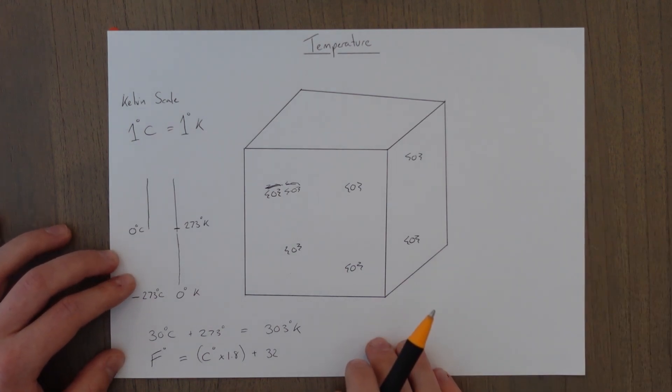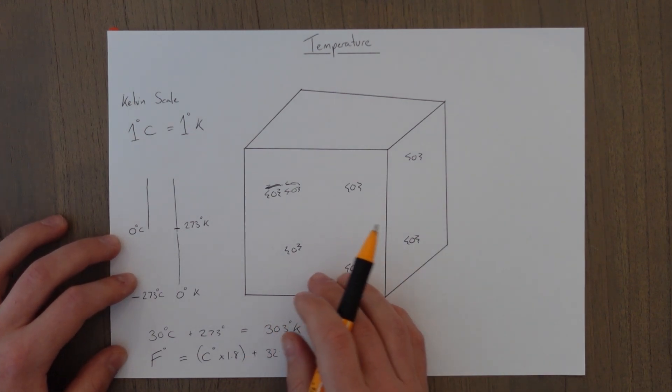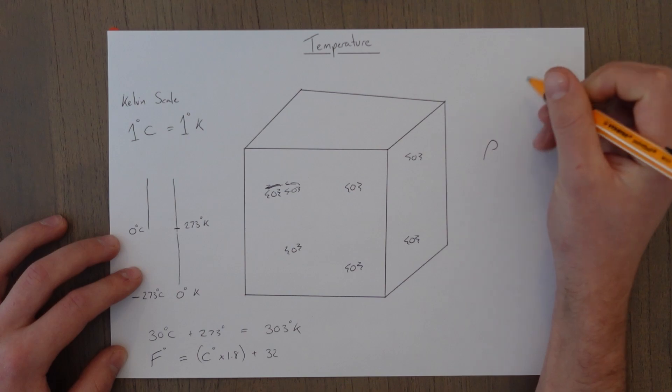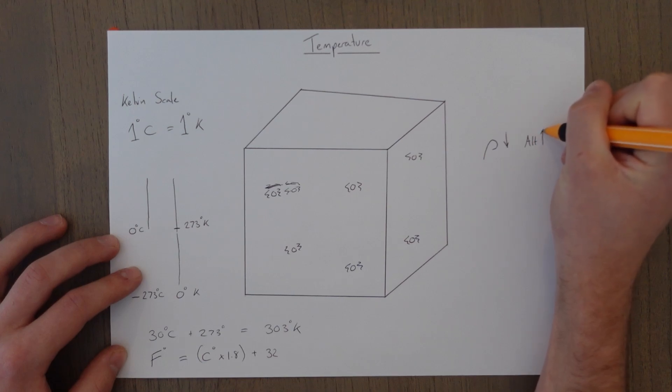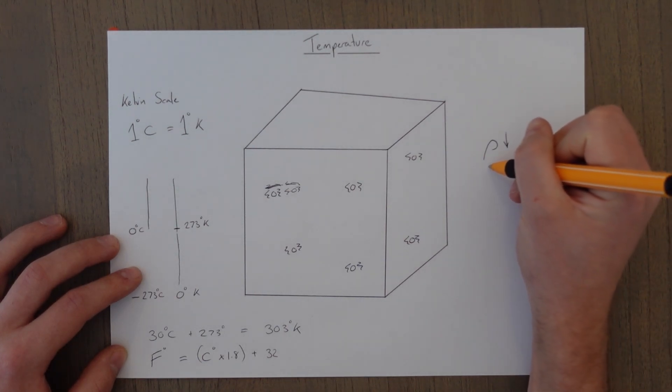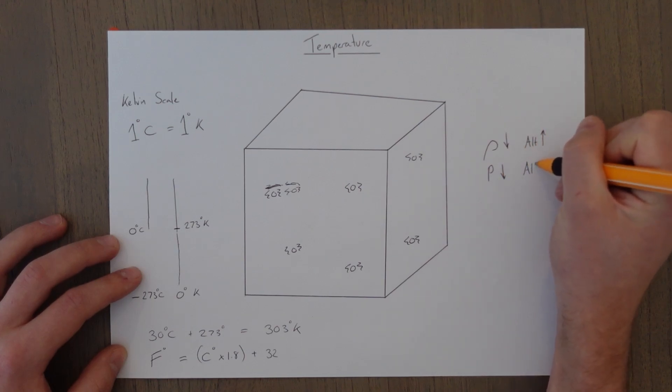Now, you may have noticed a bit of a contradiction here. We said earlier that density reduces with altitude. So density goes down as the altitude goes up. We also said that the pressure decreases as the altitude goes up.